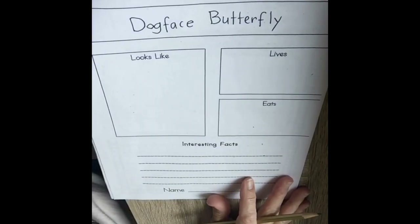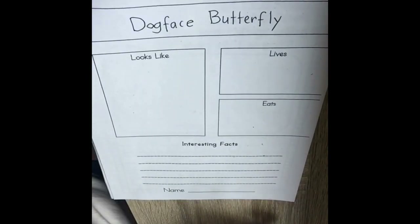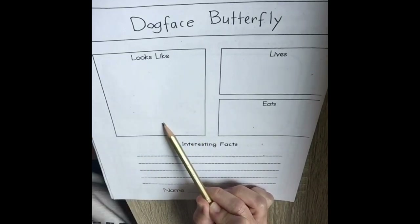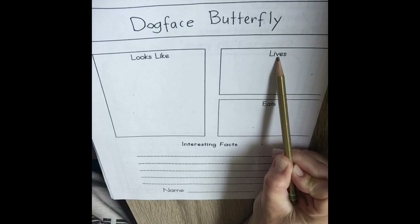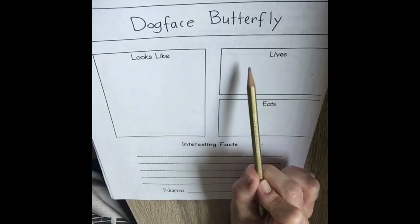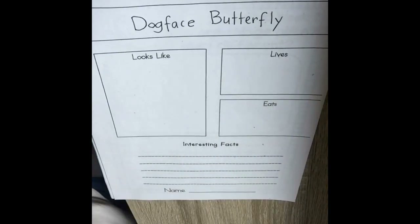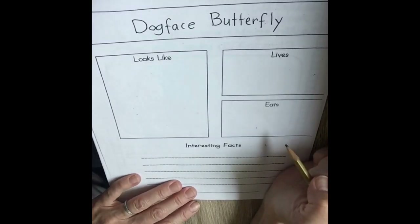Reading through this gave me some information that will help me fill in the worksheet, so we'll go ahead and show you the worksheet — you should have this too in your packet. We have an idea of what the butterfly looks like, but let's answer these questions. It says the dog face butterfly lives — and since it's a state insect, the butterfly lives in California.